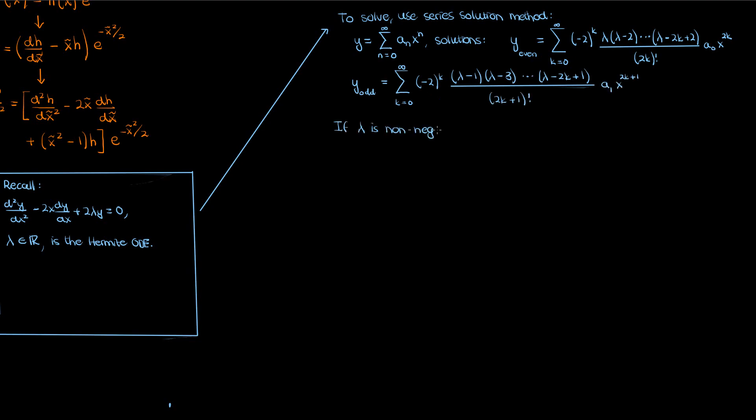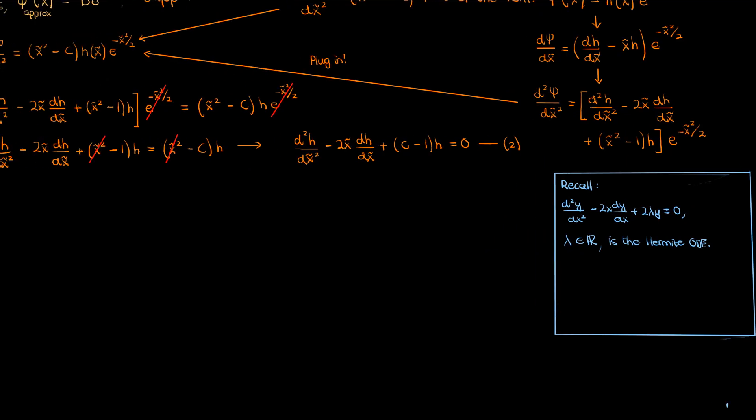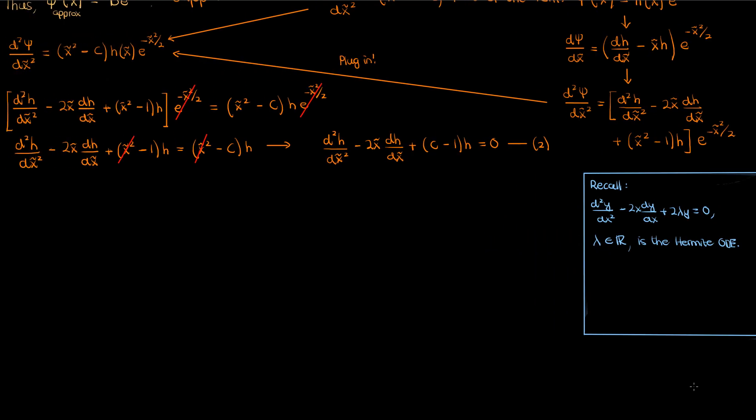Now if λ is a non-negative integer then one of these series will terminate while the other will continue on forever. The solution that corresponds to the terminating series forms what are called the Hermite polynomials. The other solution that continues forever, well we don't really care about that solution right now.